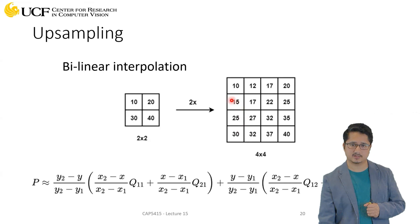If you have to find the value of this location, what you're going to do is find out how far this location is from 10, how far from 20, how far from 30, and how far from 40. So if 10 is very close then it will utilize 10 a lot, so the weight for 10 will be pretty high.